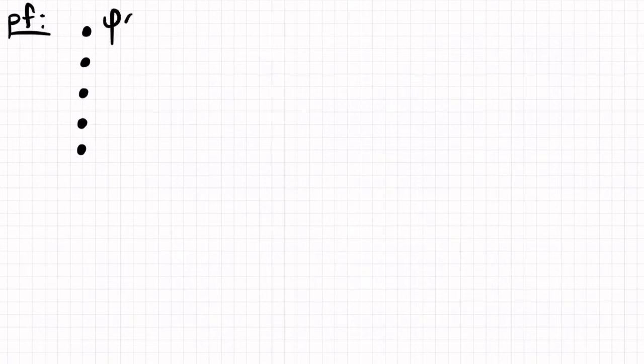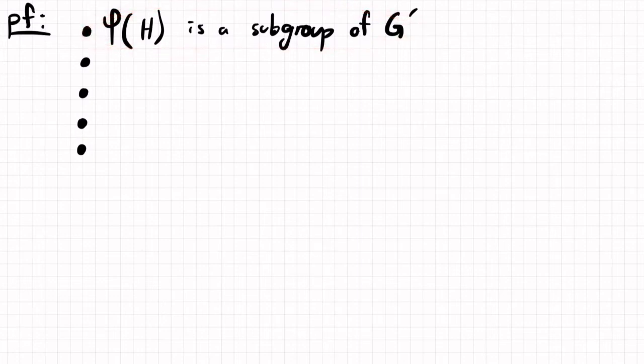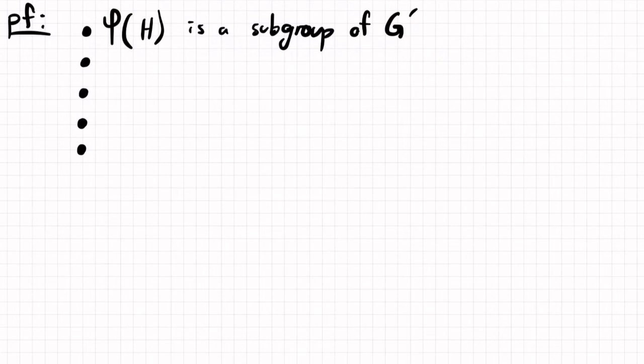First of all, that phi of H is a subgroup of G prime. So your challenge to proving that this is a subgroup, you'll have to verify that associativity, well, you won't have to verify associativity because G prime is associative, but you'll have to verify identity, inverses, and closure.